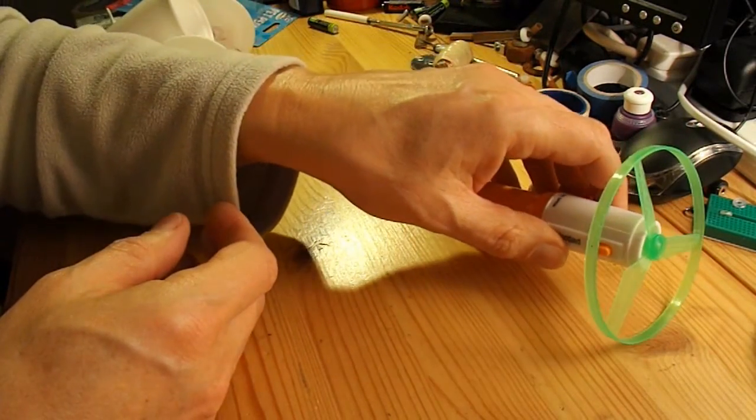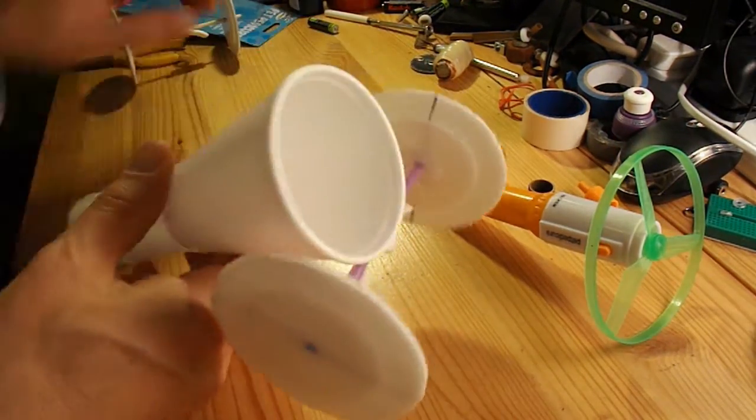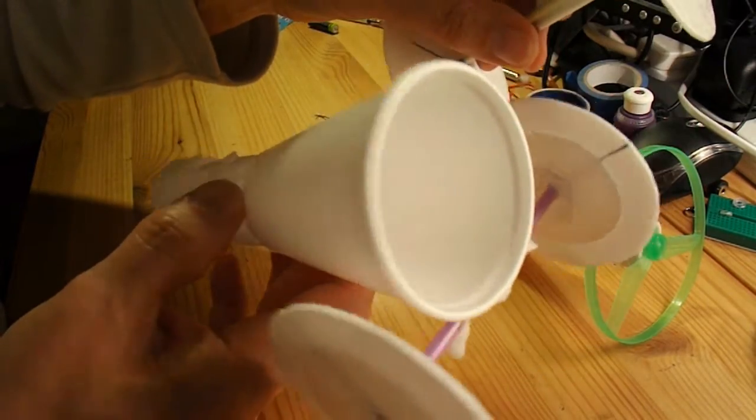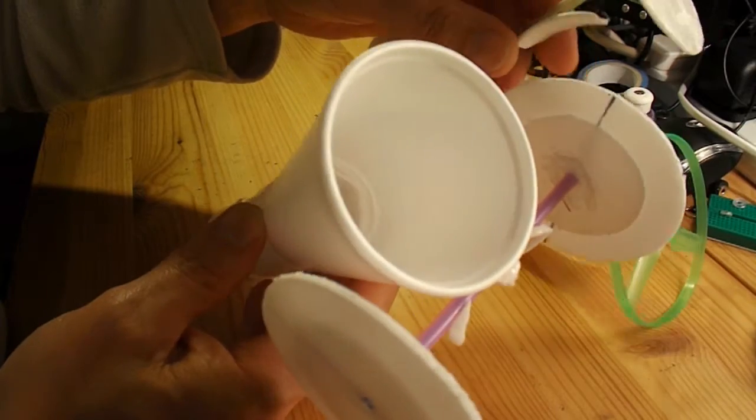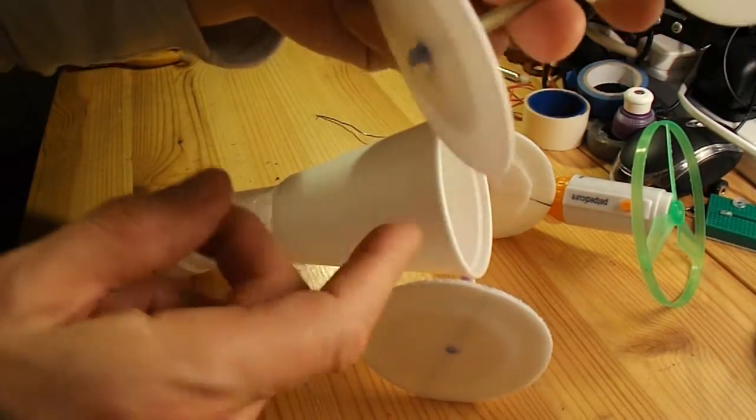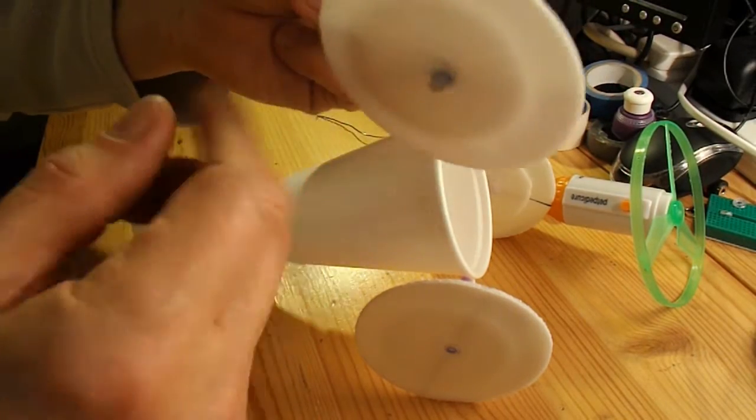Also in my scrap box, I've got the remains of a fan jet car that I made a while back. The wheels are made out of polystyrene plates.